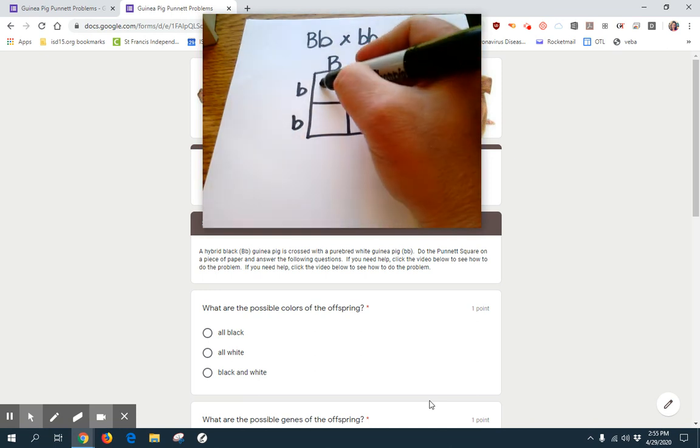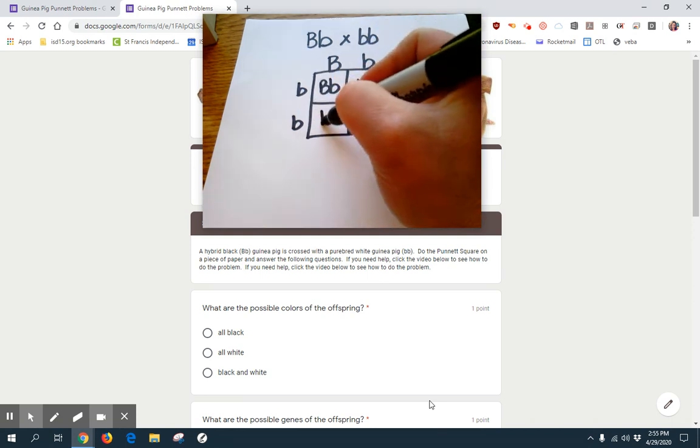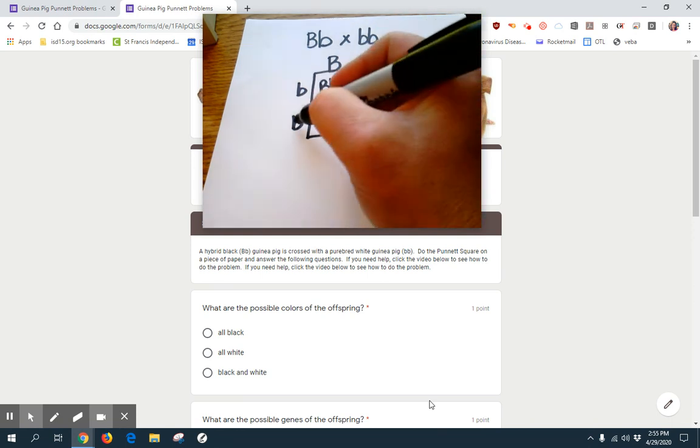And we get big B, little b here, little b, little b here, big B, little b here, little b, little b here.